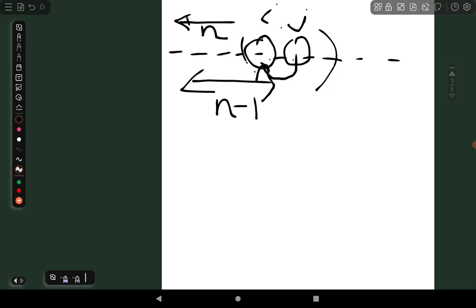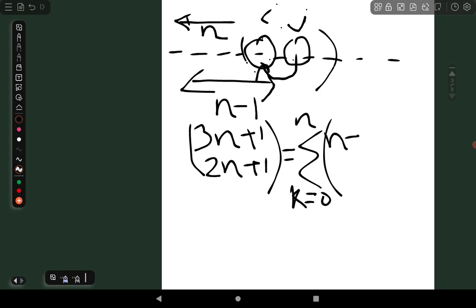So, no undercounting and no overcounting. That means, the first way of counting is exactly equal to the second way of counting. And, hence we have proved. Thank you.